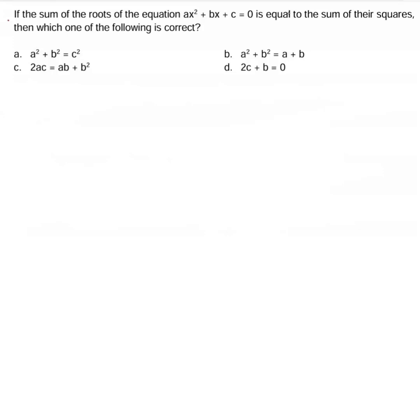The sum of the roots of the equation ax² + bx + c = 0 is equal to the sum of their squares. Find which of the following is correct. The given equation is ax² + bx + c = 0.